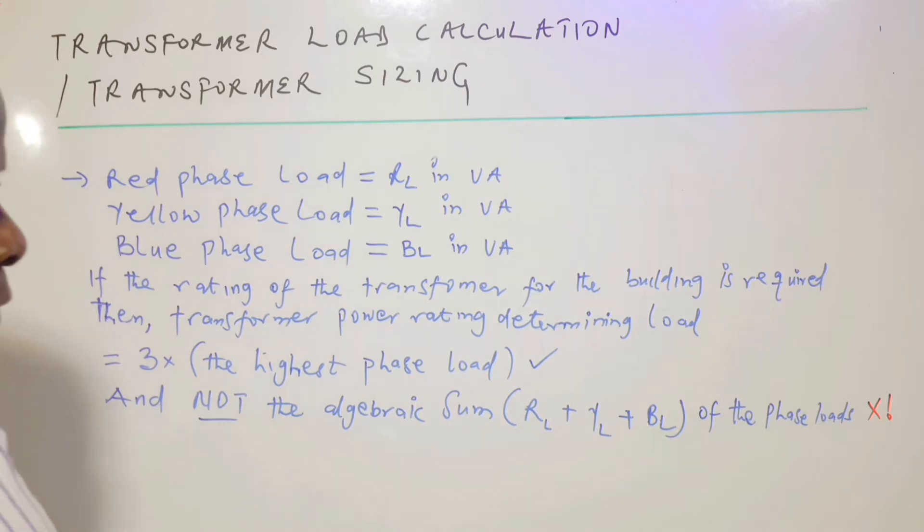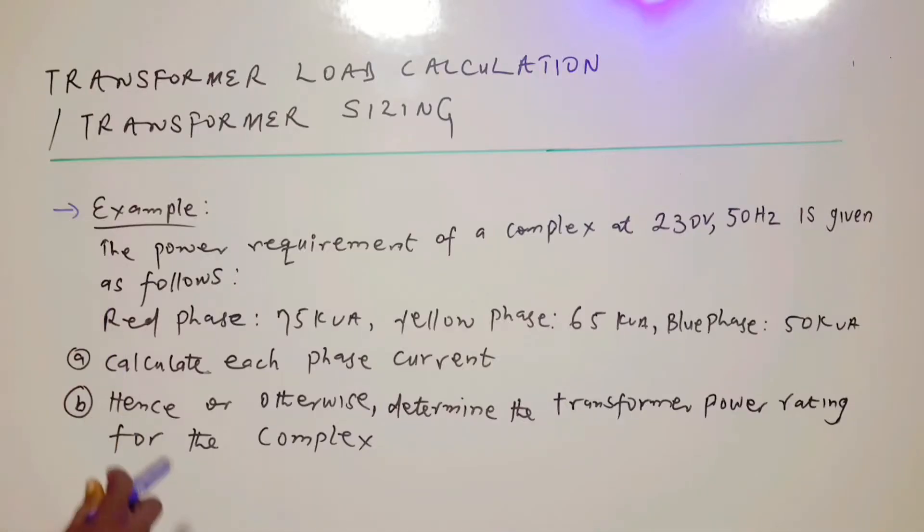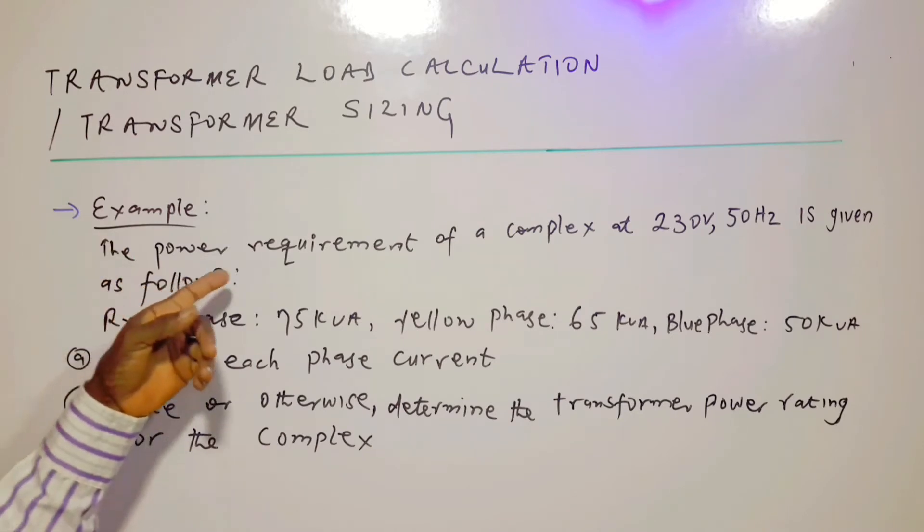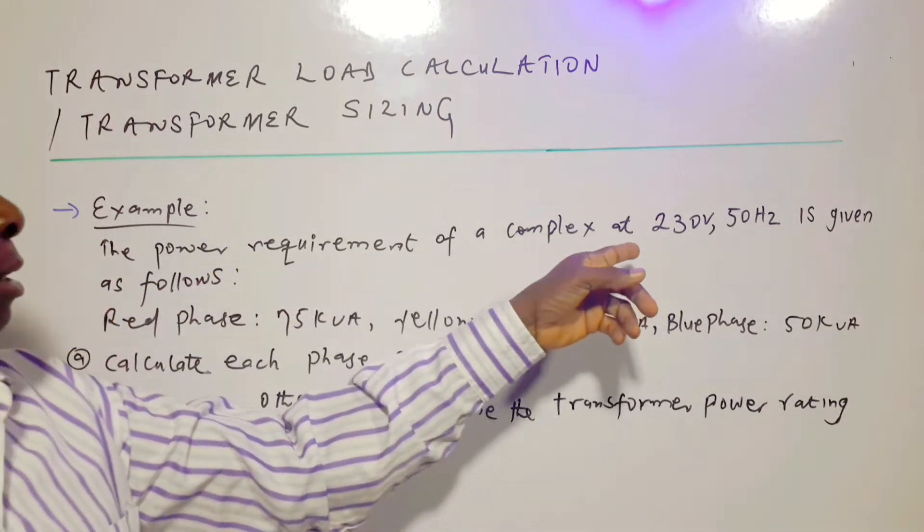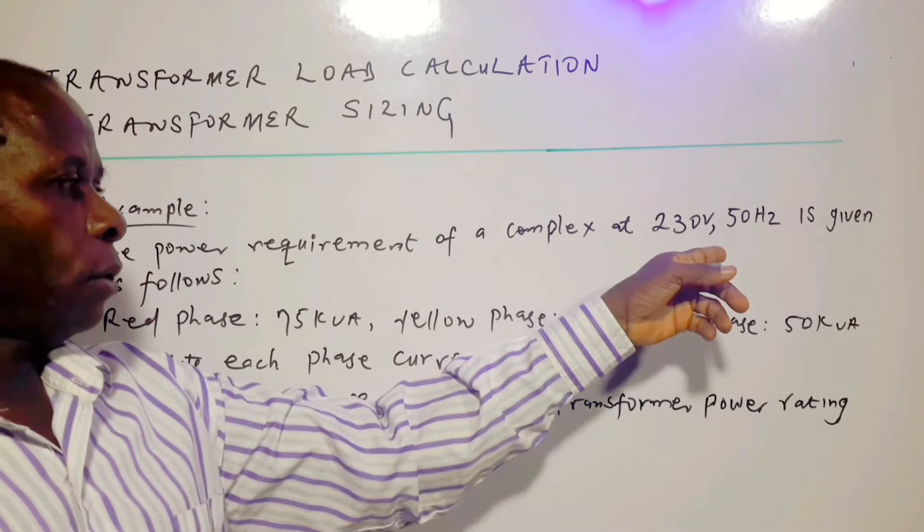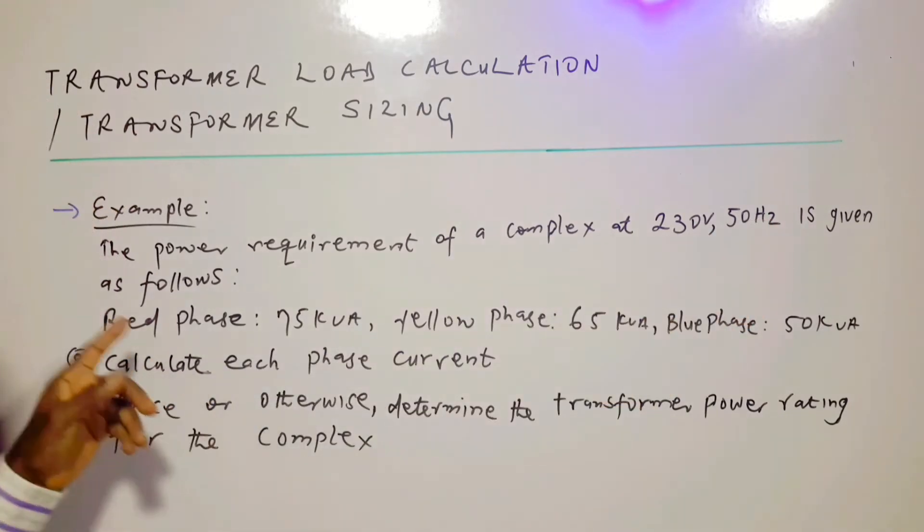For the purpose of understanding, we use one example to explain everything clearly. Here is the example. The power requirement of a complex at 230 volts, 50 hertz is given as follows.